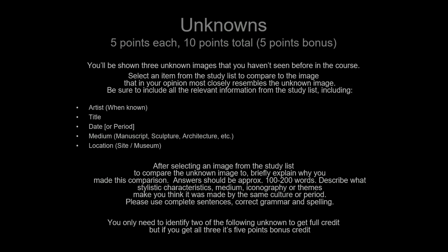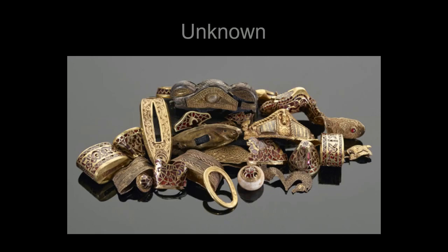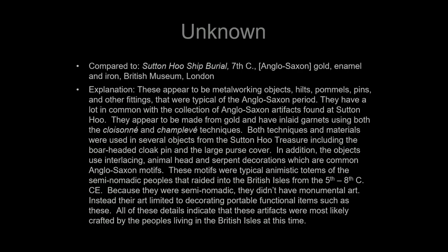Finally, there are the unknowns. The unknowns are a little different — they're going to assume that you haven't seen this either in class or in person, but it should look similar to something off the study list. What I want you to do is compare it to something off the study list. For example, if I gave you something like the Staffordshire Treasure — an Anglo-Saxon artifact — you could compare it to something like the Sutton Hoo ship burial, which is an item off the study list. You'd list out the details of why you thought it was similar — the styles, techniques, and themes that made you think it was created at the same time.